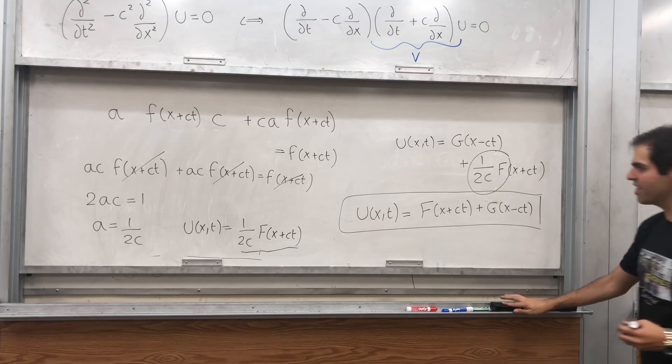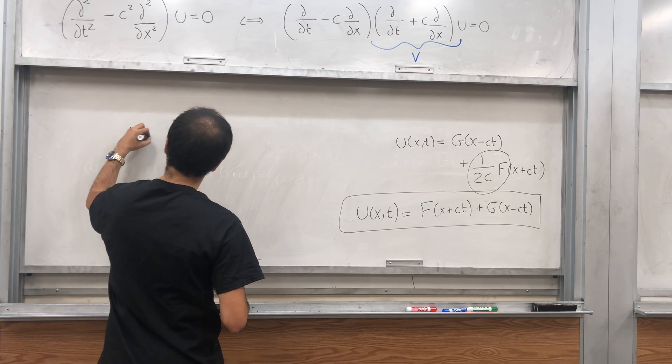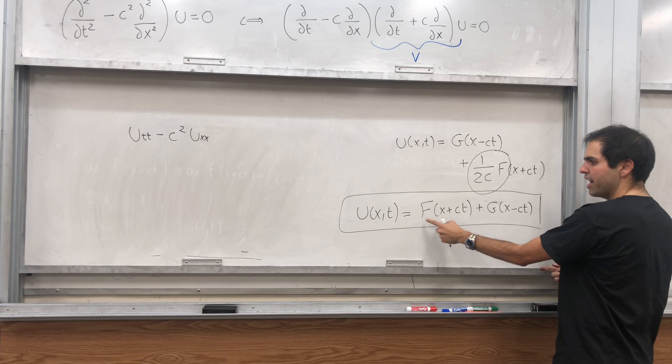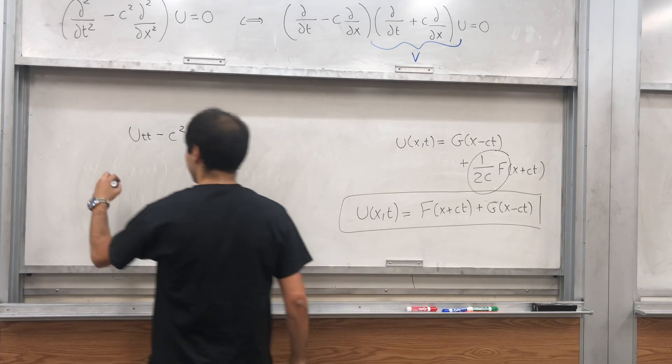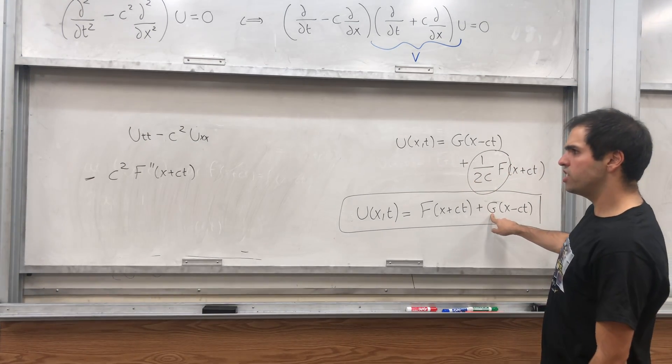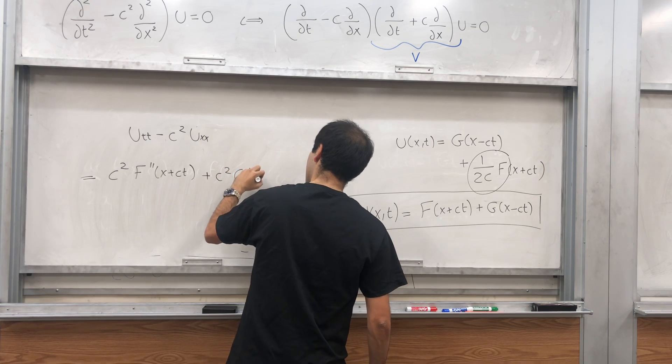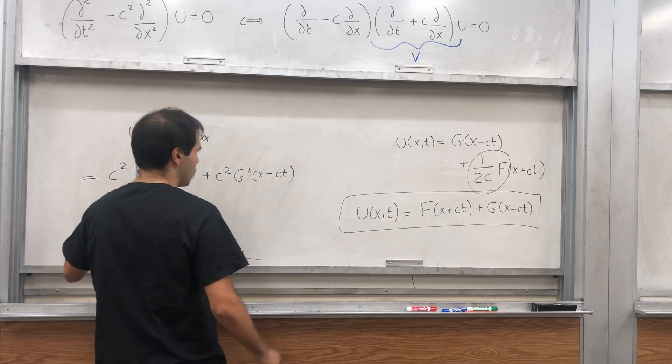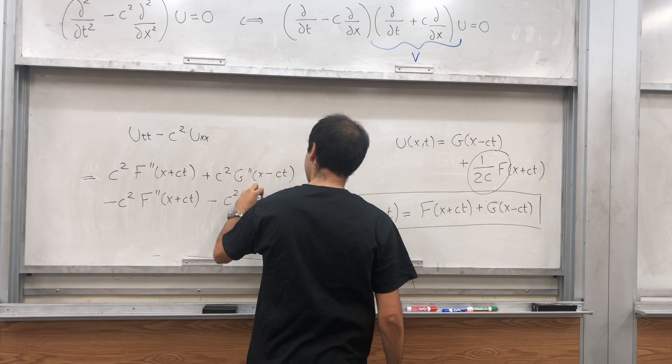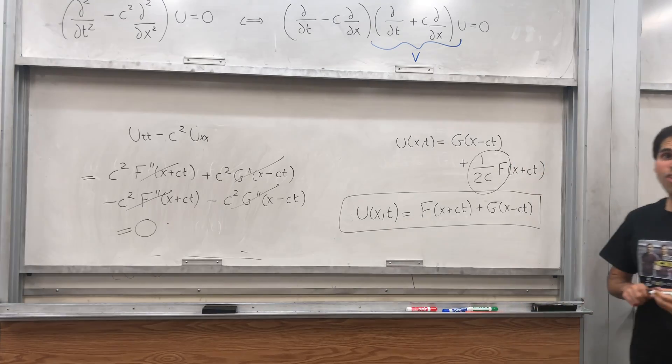And in fact, if you want you can check this. Because if you calculate u_tt minus c squared u_xx, what you get, if you differentiate this twice with respect to t, you get basically capital F double prime times c squared of x plus ct, and then capital G double prime, but here we have minus c times minus c which just becomes plus c squared of x minus ct, and then minus c squared you differentiate this twice with respect to x of x plus ct, and minus you differentiate this twice with respect to x. And all this cancels out, and this is zero. How beautiful is that?